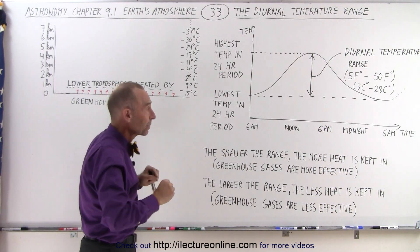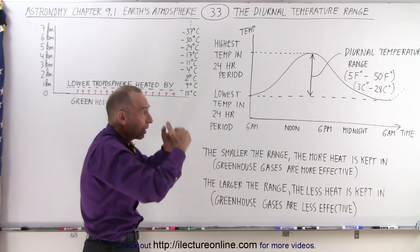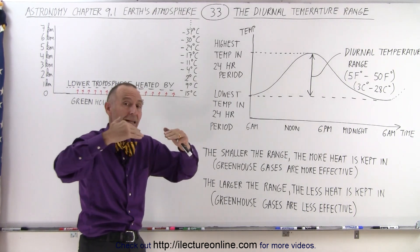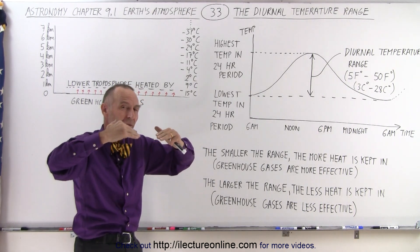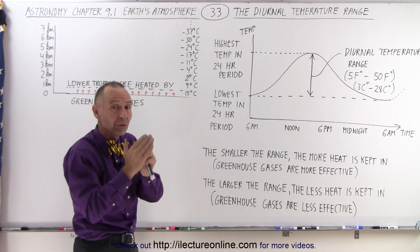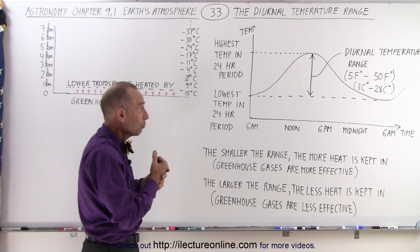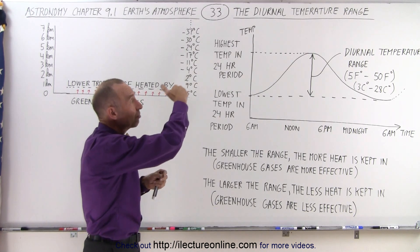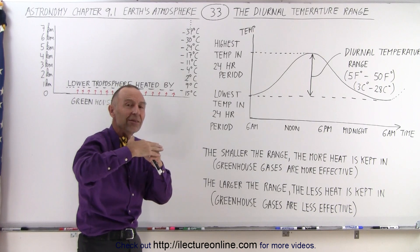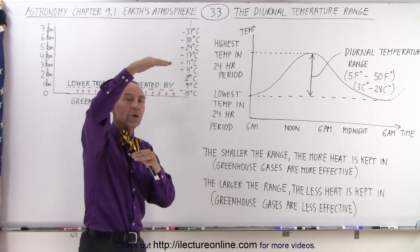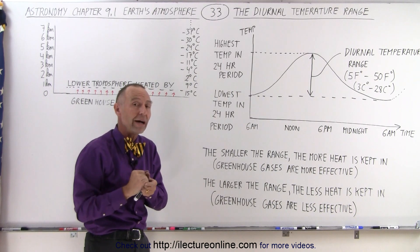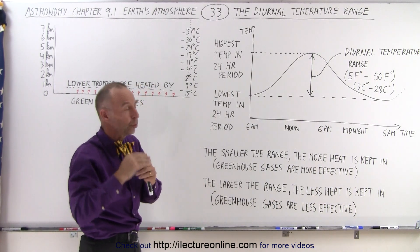That's the heating effect. So when the amount of heat added to the lower troposphere through that effect begins to balance out with the amount of heat that's leaving the lower troposphere into the higher regions, the temperature stabilizes, and then the temperature begins to decrease as the rate of heat disappearing out of the lower troposphere is greater than the amount of heat the sun can provide, and so things begin to cool down.